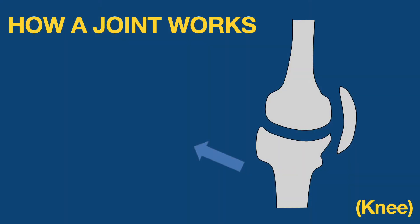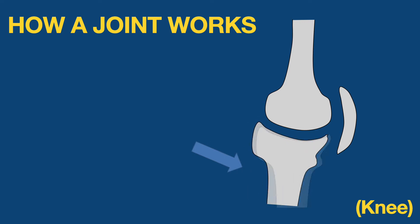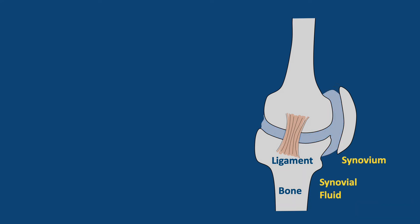To understand what causes pain in osteoarthritis, let's first look at how a healthy joint works. A joint is where two or more bones meet. They allow bones to move freely without letting them move too far. A joint is held together by ligaments. There is a soft inner lining to the joint called the synovium. A thick fluid created by the synovium protects the joint.